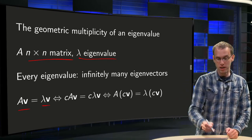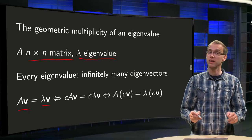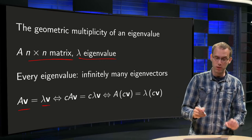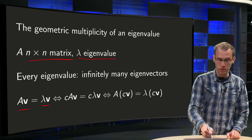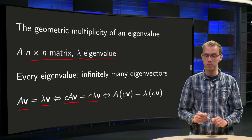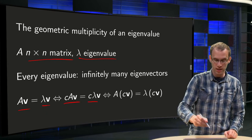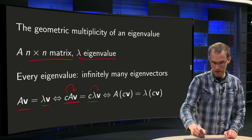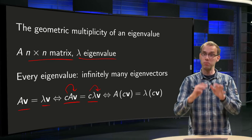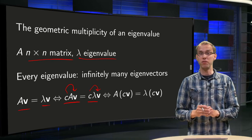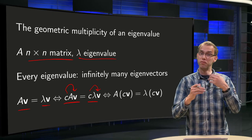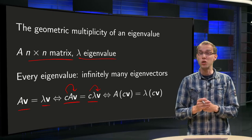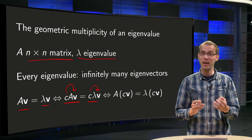Well, suppose you have A times v equals lambda times v. Then you can multiply by any scalar c — but not zero — so c times A times v equals c times lambda times v. Taking c inside gives A times (c·v) equals lambda times (c·v).